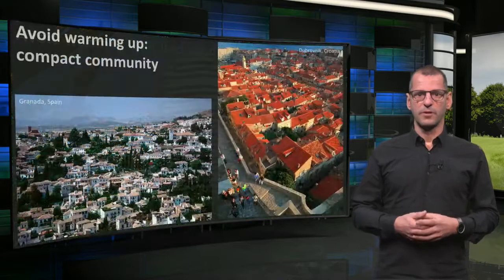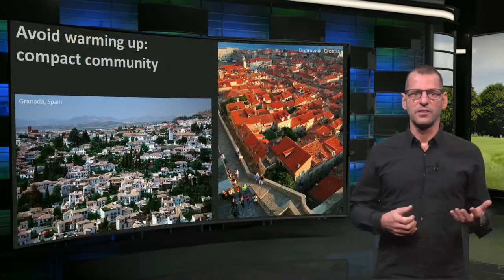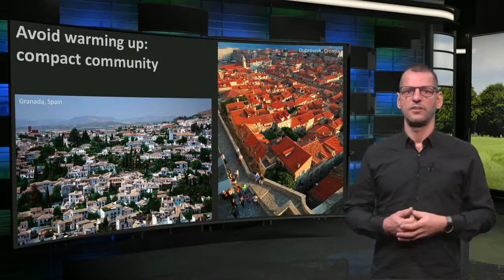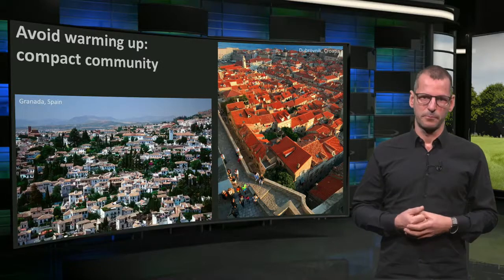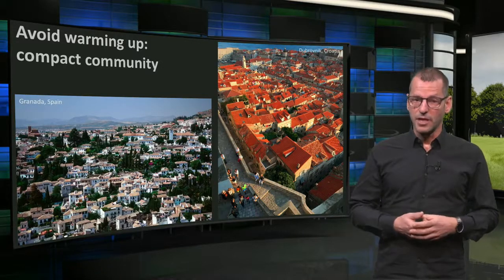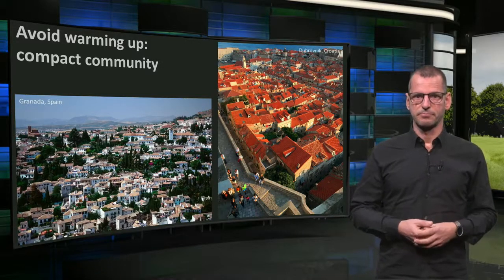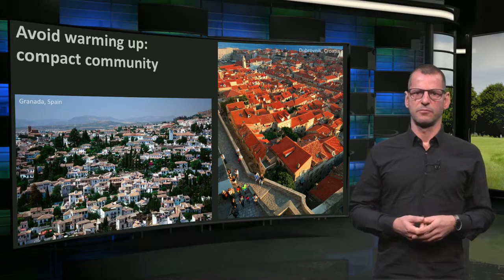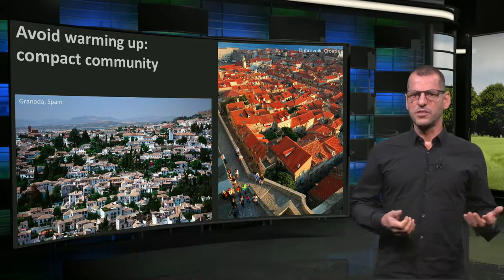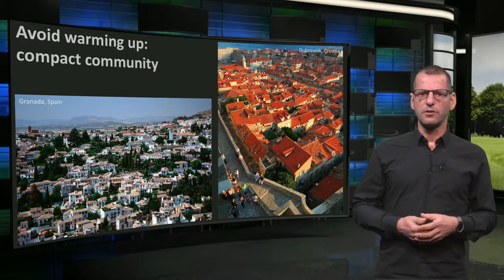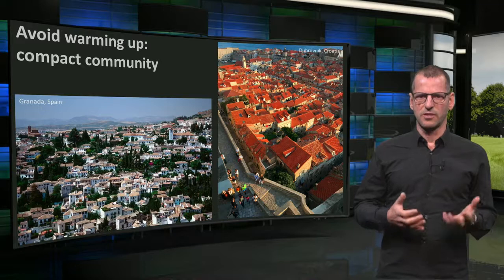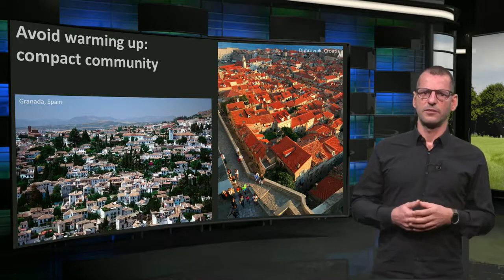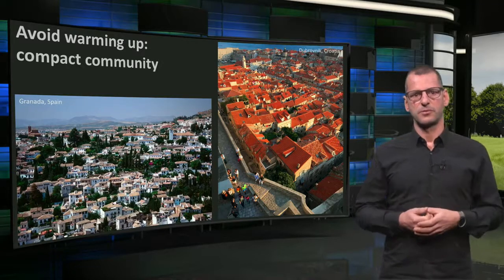In hot and warm climates, the avoidance of unnecessary warming up of buildings is very important in the design of a building, especially with the prospect of climate change. The urban setting is quite decisive. With old settlements, one can often see that the urban plan was made dense and compact, allowing little sunlight onto the streets and façades.